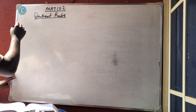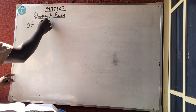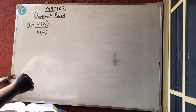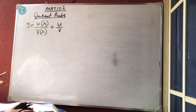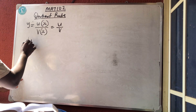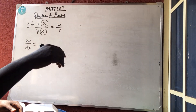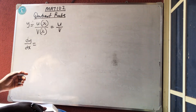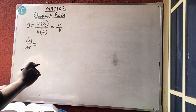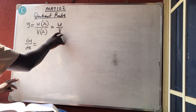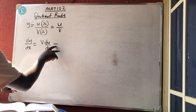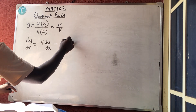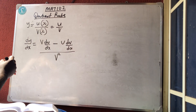For the quotient rule, we have y equal to u — a function of x — all over v — a function of x — which can simply be written as u over v. The formula says dy/dx equals... and in quotient rule, we must start from v and end in v. Unlike the product rule where you can start anywhere, in quotient rule you must start from the denominator.